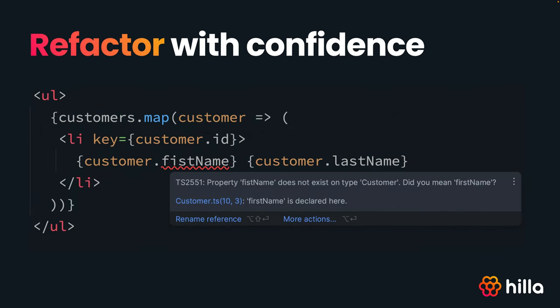What's better, you can also refactor with confidence — so if you change something in your backend API, you will get a build time error in your UI.